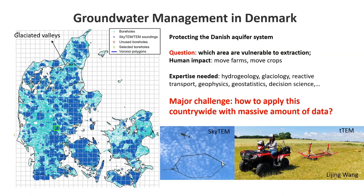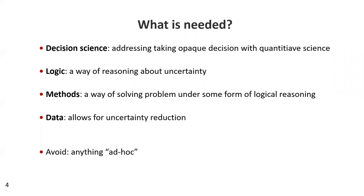The major challenge, of course, is how do you apply that at such a large scale? How do you manage these groundwater systems? Are we going to use science — in particular, fields from hydrogeology to geophysics to geostatistics and decision science — and do that in a scientific fashion? What's needed here is decision science, which is a way of addressing opaque decision questions into actual quantitative science. What's also needed is a way of reasoning about uncertainty, because the decision is going to be made not based on a deterministic outcome, but based on uncertainty. So how do we reason about that, and what are the methods of solving such problems for decision making under uncertainty?